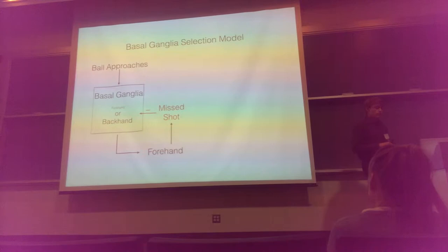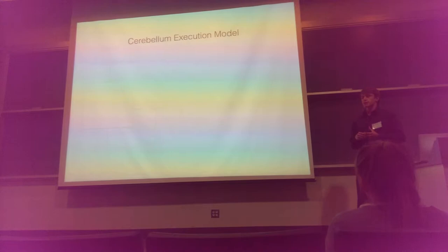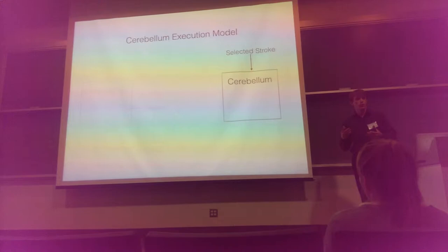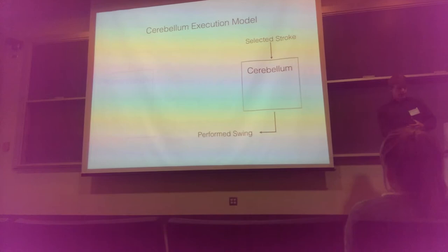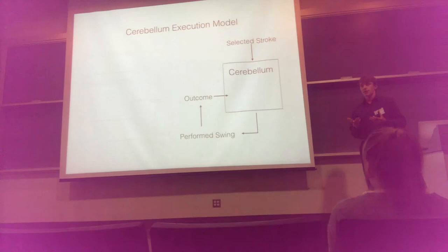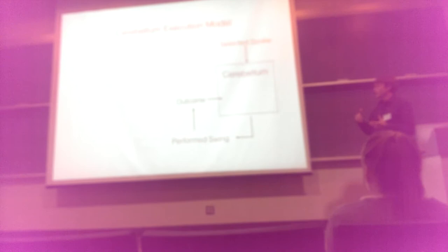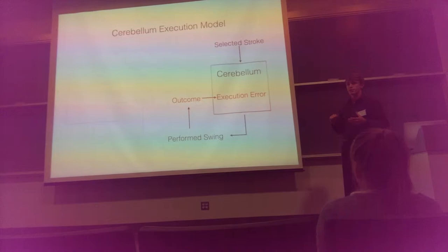On the other hand, we have the cerebellum execution model. This model takes in some selection — say we select a forehand in the tennis example — and actually performs the swing, which leads to some outcome. A good outcome occurs when the performed swing matches some internal desired swing. However, a negative outcome occurs when the performed swing does not match that desired swing. This error is called an execution error, and this is how the system knows it needs to improve itself in the future and work on its swing.